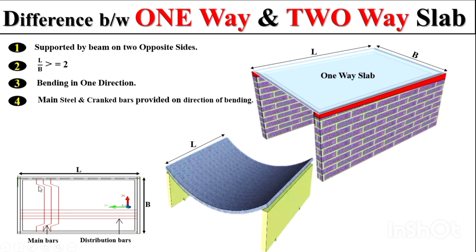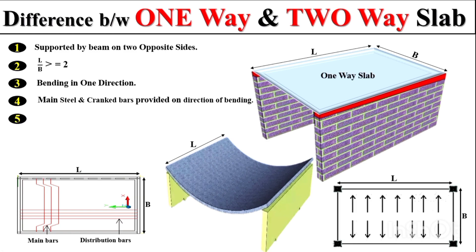The other reinforcement, which is called distribution bar, is arranged on the shorter span. In a one-way slab, the main reinforcement resists the flexural stresses and load of the slab. Also remember, in a one-way slab, the slab load is transferred along one direction — on the two opposite walls or two opposite beams.